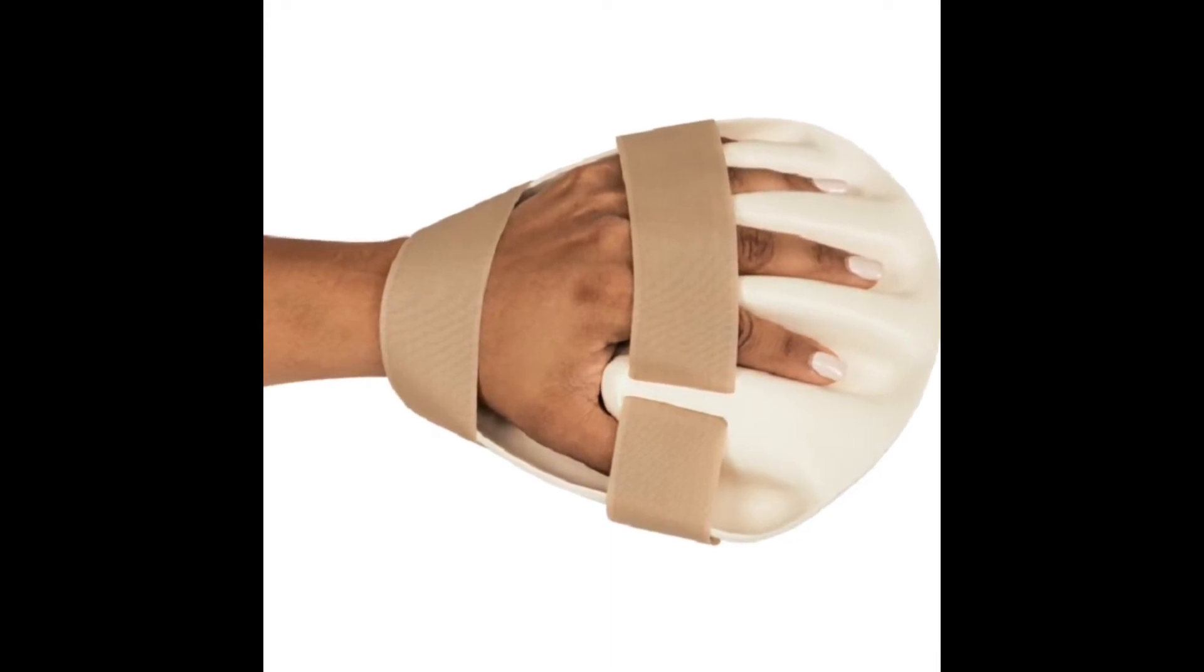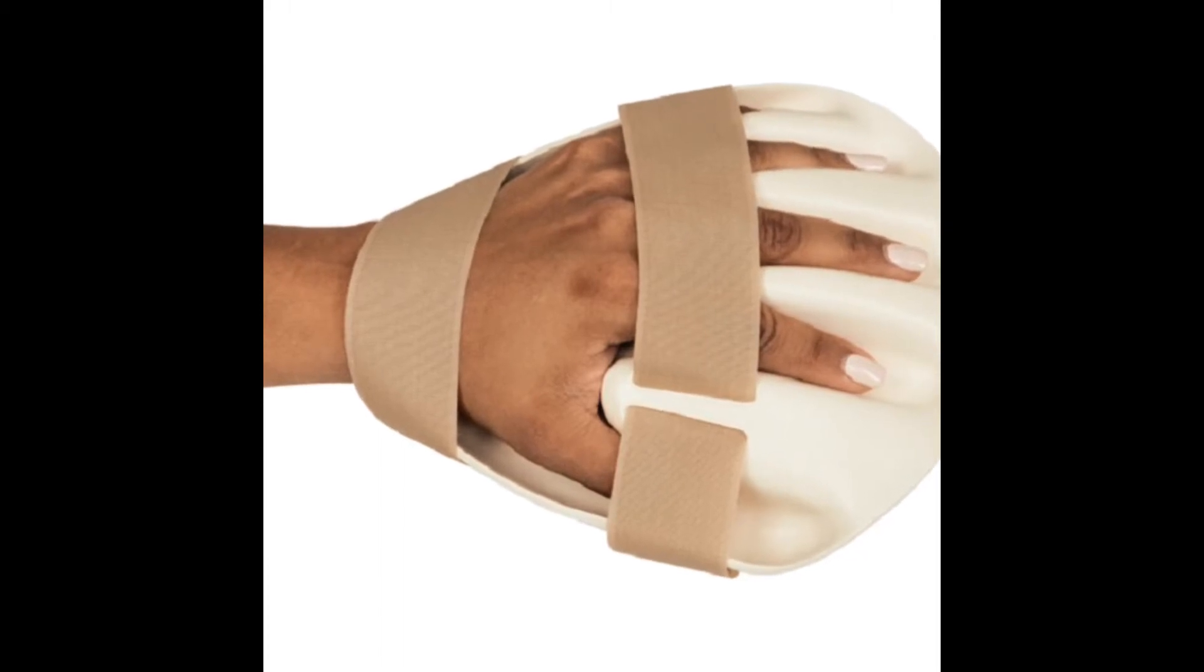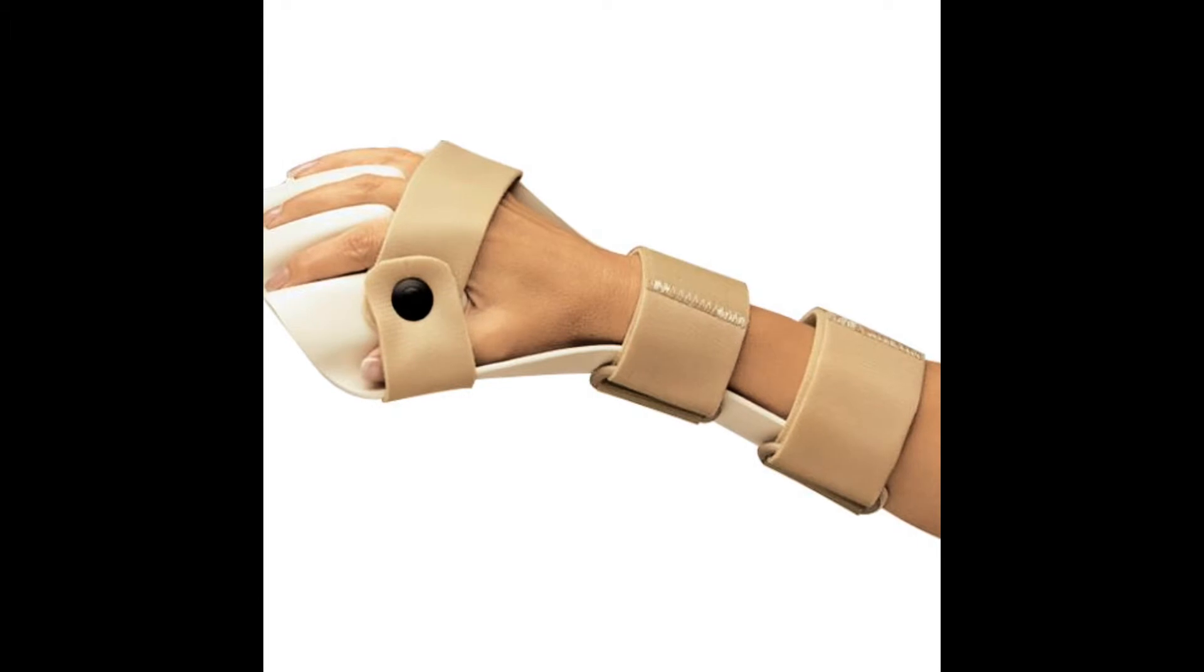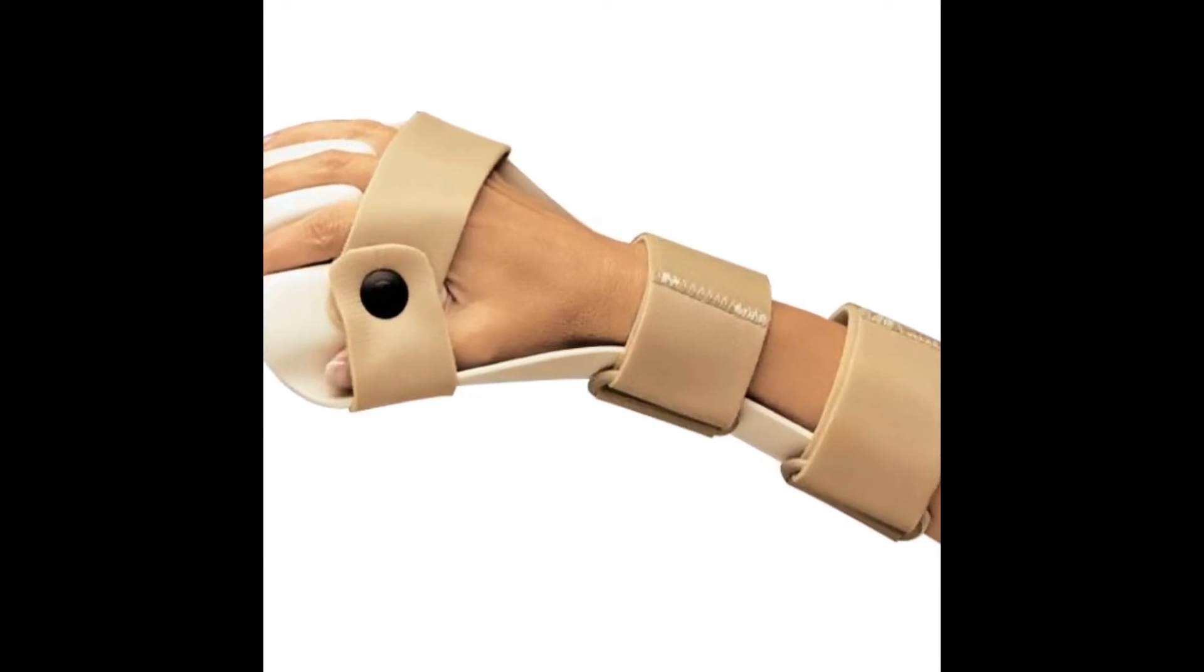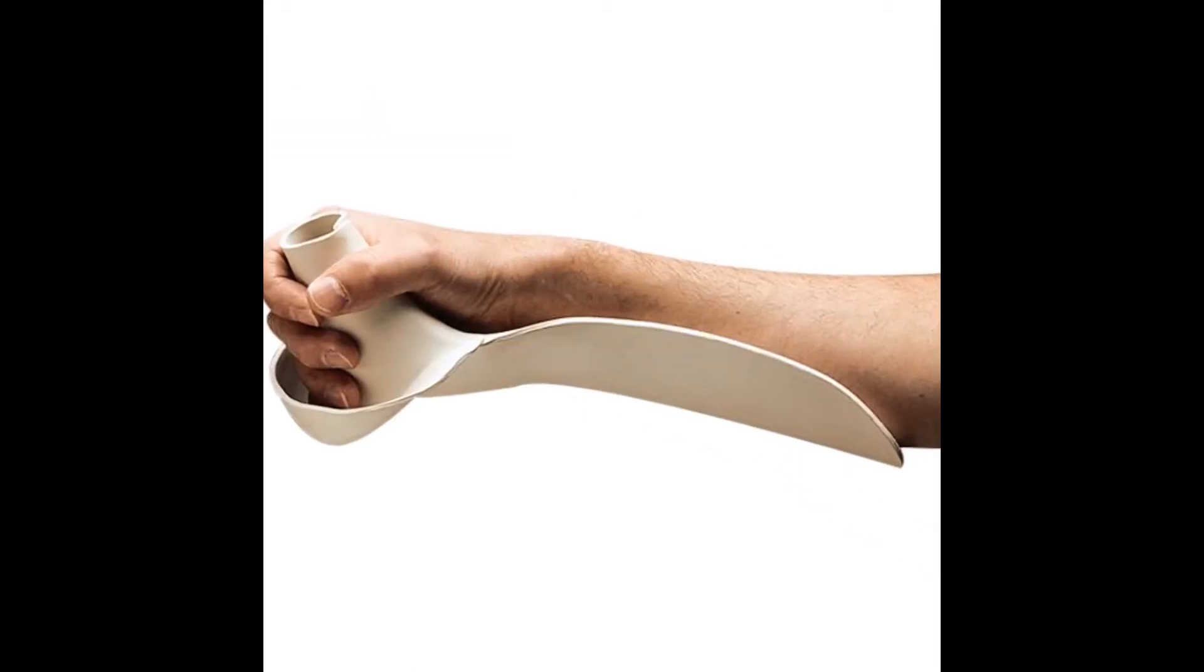Fibromyalgia patients feel spasticity on trigger points. There are 18 trigger points in fibromyalgia patients which cause more pain. Trigger points also seem to be related to the central nervous system, that's why fibromyalgia patients feel more pain in the trigger points than the rest of the body.